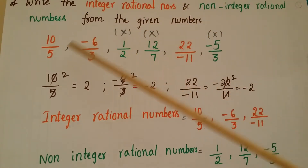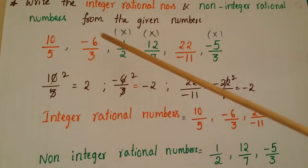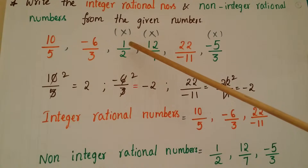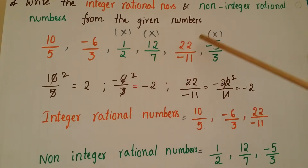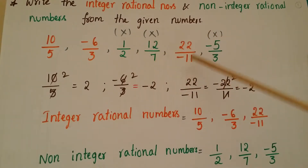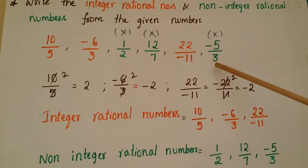So here these are the rational numbers: 10 by 5, minus 6 by 3, 1 by 2, 12 by 7, 22 by minus 11, and minus 5 by 3.